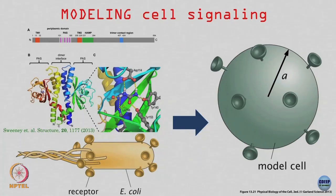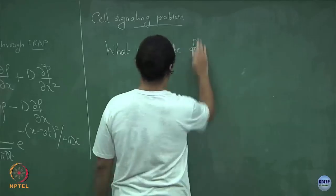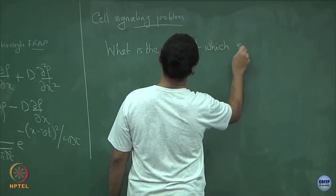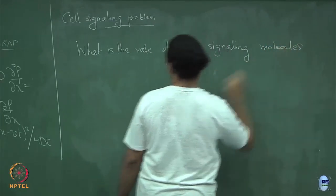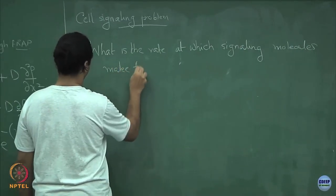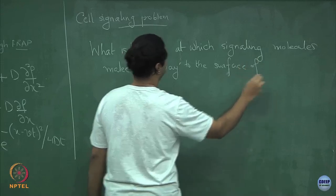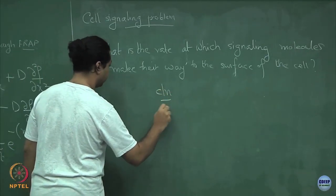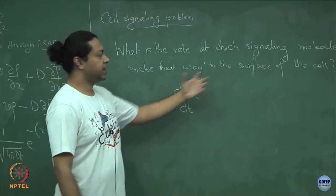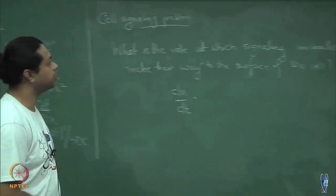Let me write down the proper question. What I want to ask is: what is the rate at which signaling molecules — like urea or HCl in the case of H. pylori — make their way to the surface of the cell? In other words, I want to calculate dn/dt: the number of signaling molecules coming to the surface of the cell per unit time.